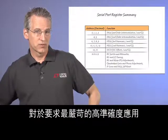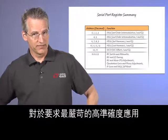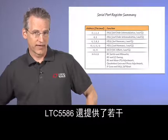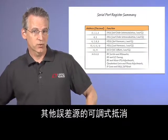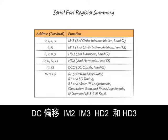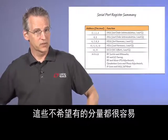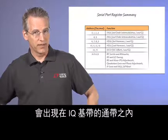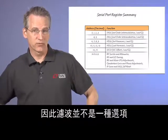For the most demanding high-accuracy applications, the LTC5586 also provides adjustable cancellation of several other sources of error: DC offset, IM2, IM3, HD2, and HD3. These undesired products can all easily show up within the passband of the IQ baseband, so filtering is not an option.